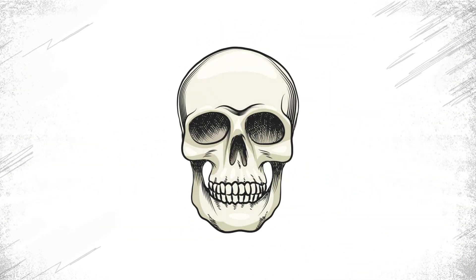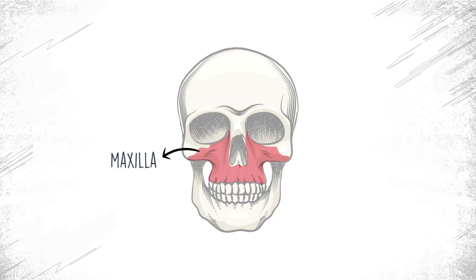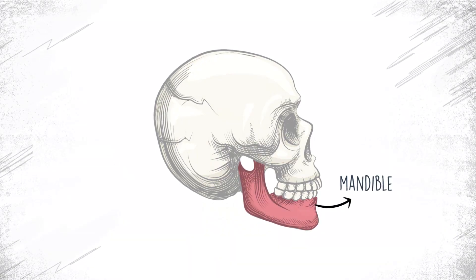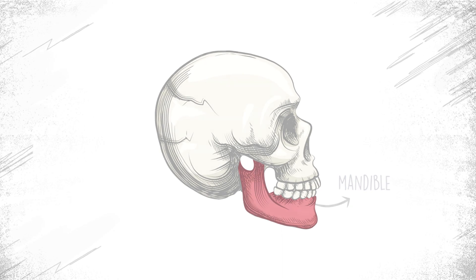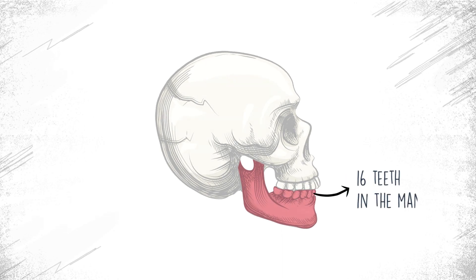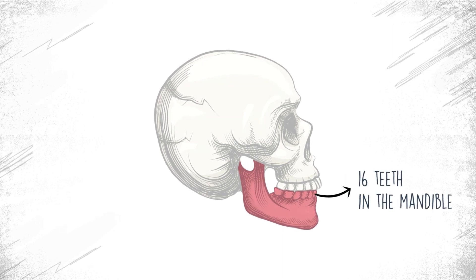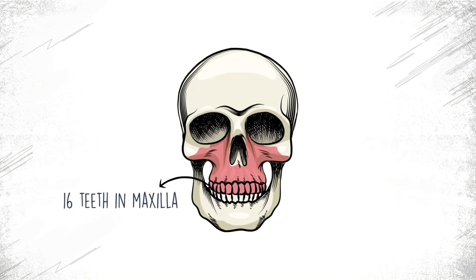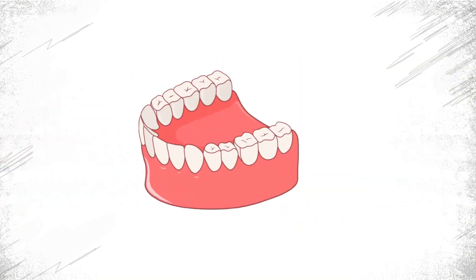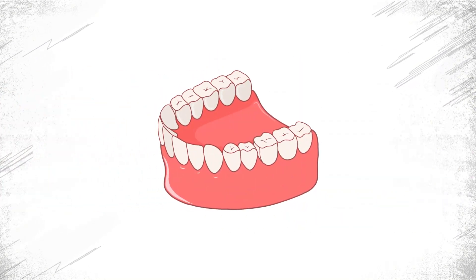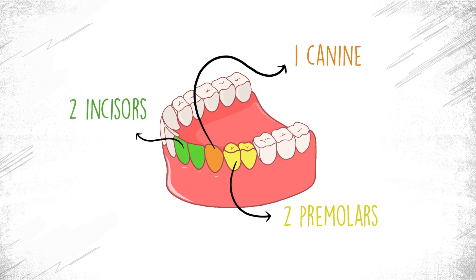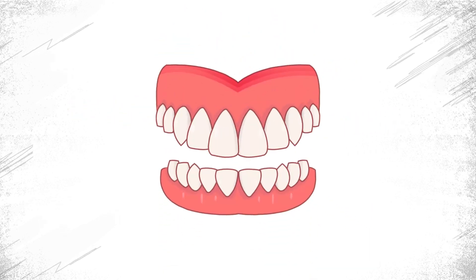The upper teeth are housed in the maxilla and the lower teeth are housed in the mandible. In adults there are generally 16 teeth in the mandible and 16 teeth in the maxilla. In each quadrant, which is equal to a quarter of the mouth, there are two incisors, one canine, two premolars, and three molars.